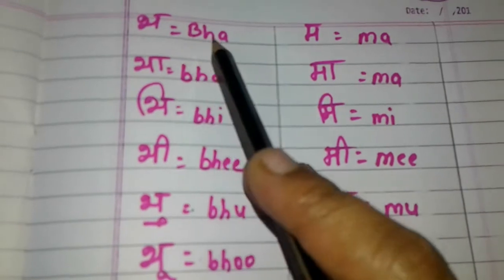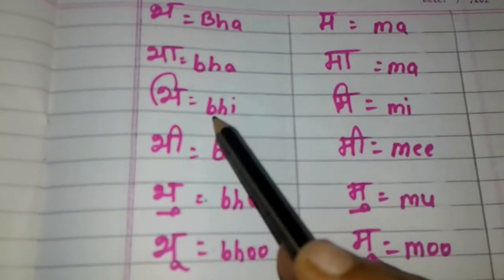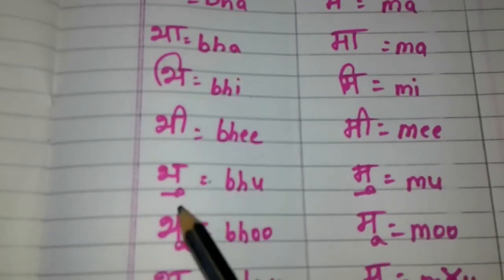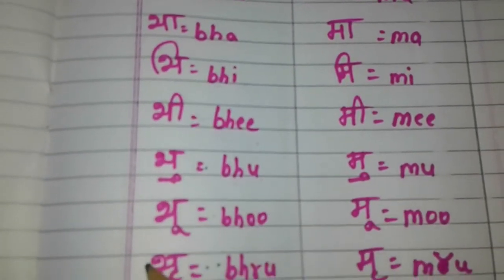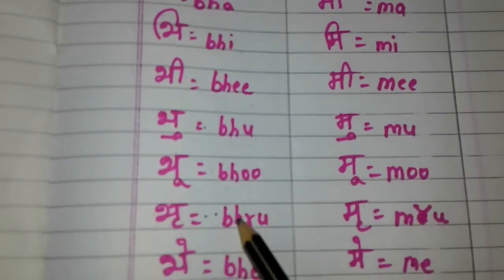Bha, B-H-A. Bhi, B-H-I. Bhee, B-H-E. Bhu, B-H-U. Bhoo, B-H-O-O. Bhru, B-H-R-U.